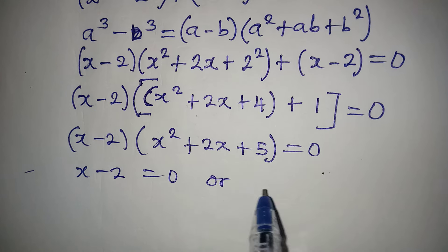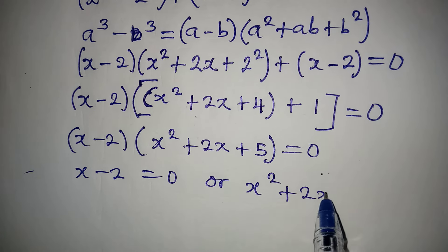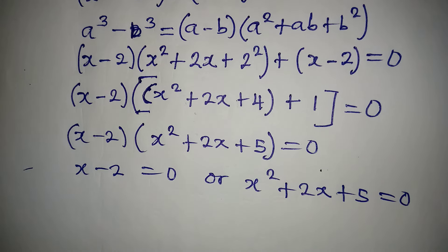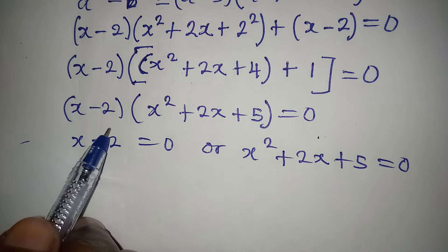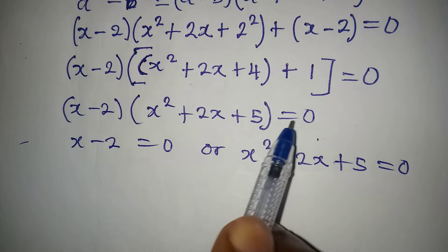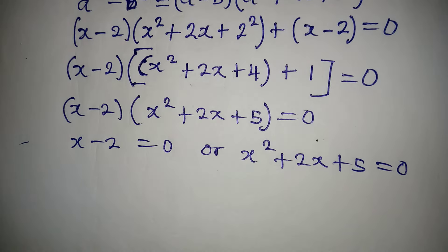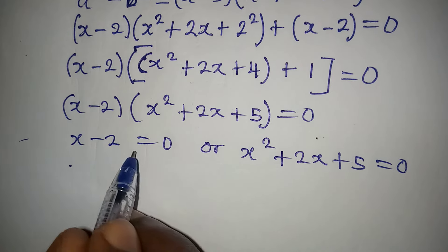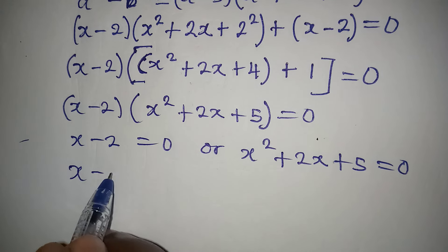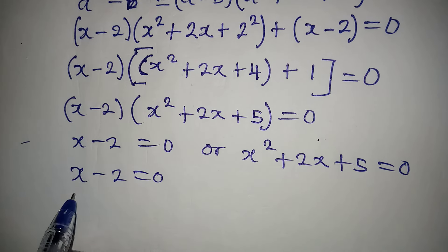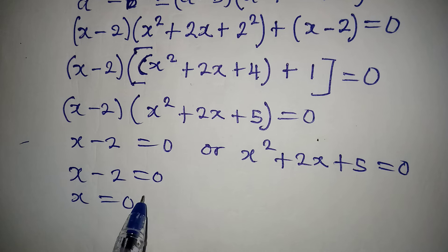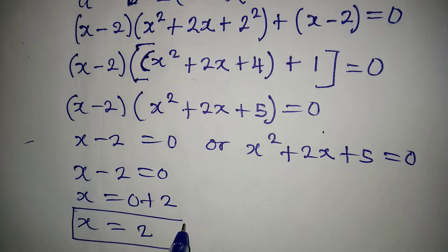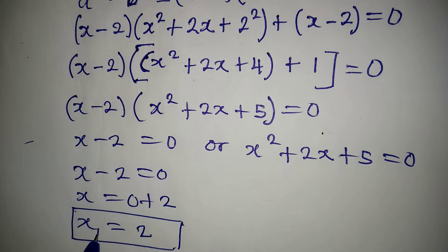So we have x minus 2 as the common factor, and x squared plus 2x plus 5, and this equals zero. Applying the zero product rule, x minus 2 equals zero, or x squared plus 2x plus 5 equals zero. From the linear equation, x minus 2 equals zero means x equals 2. This is our first solution, x₁ equals 2.